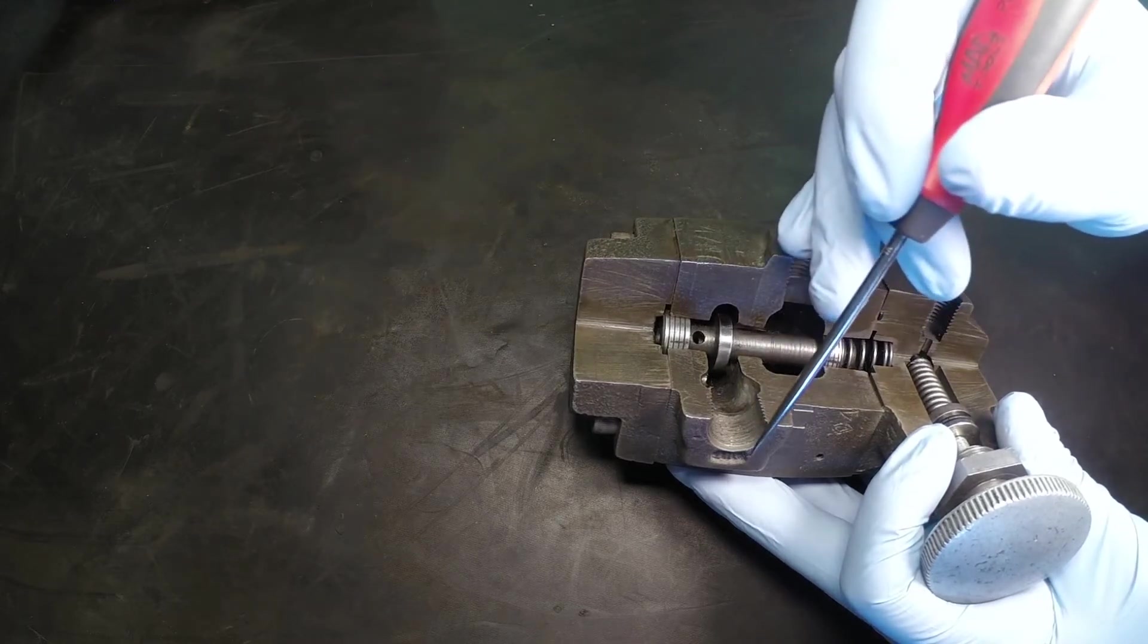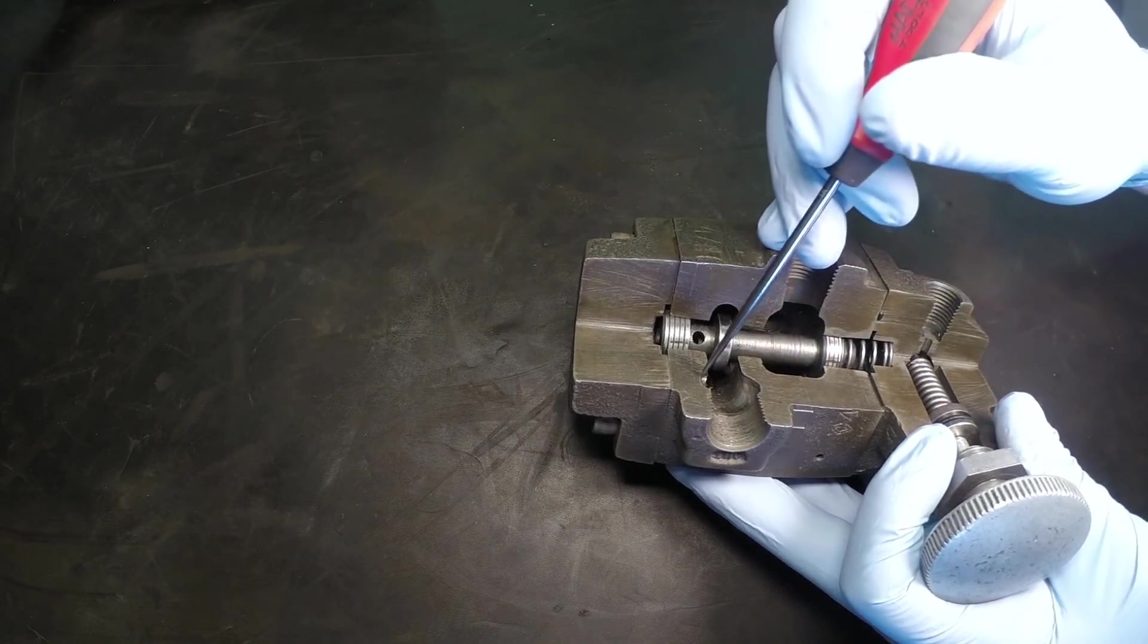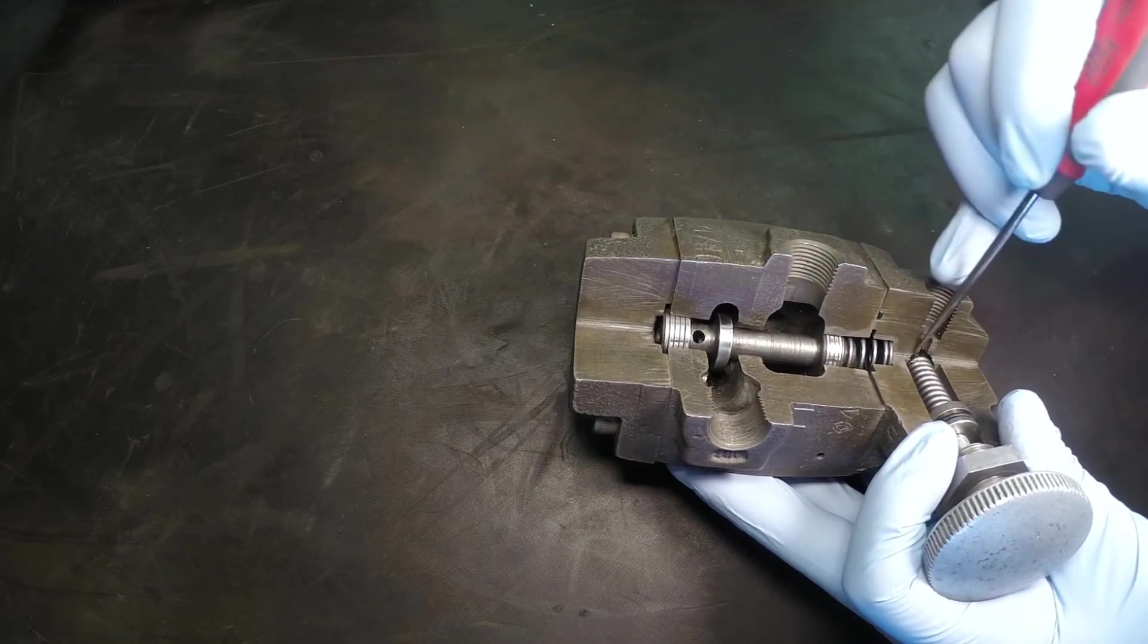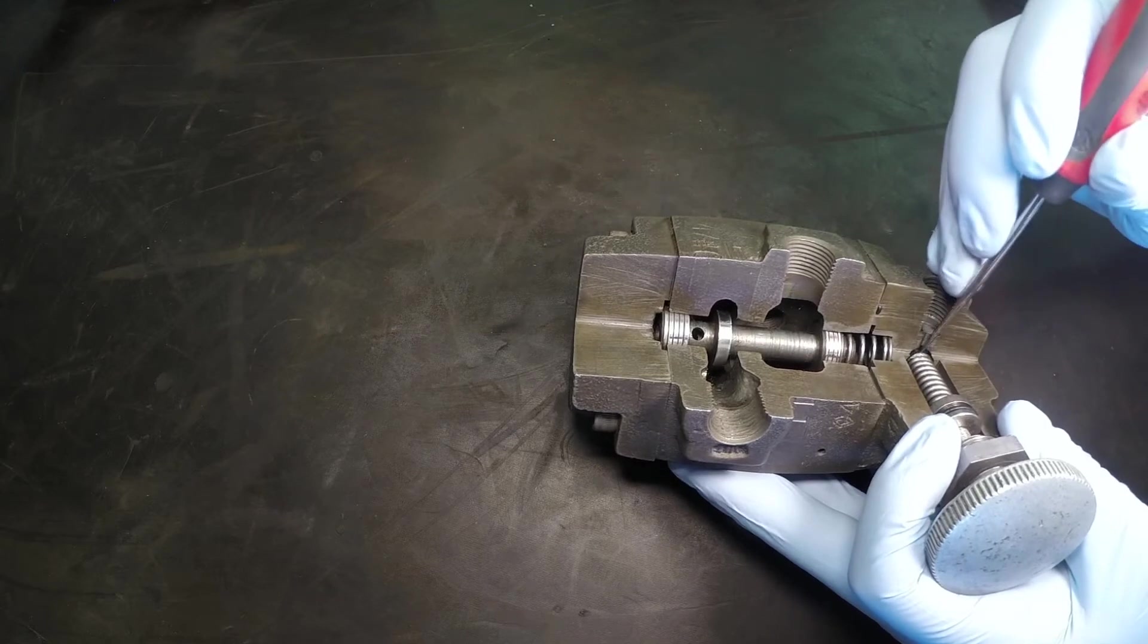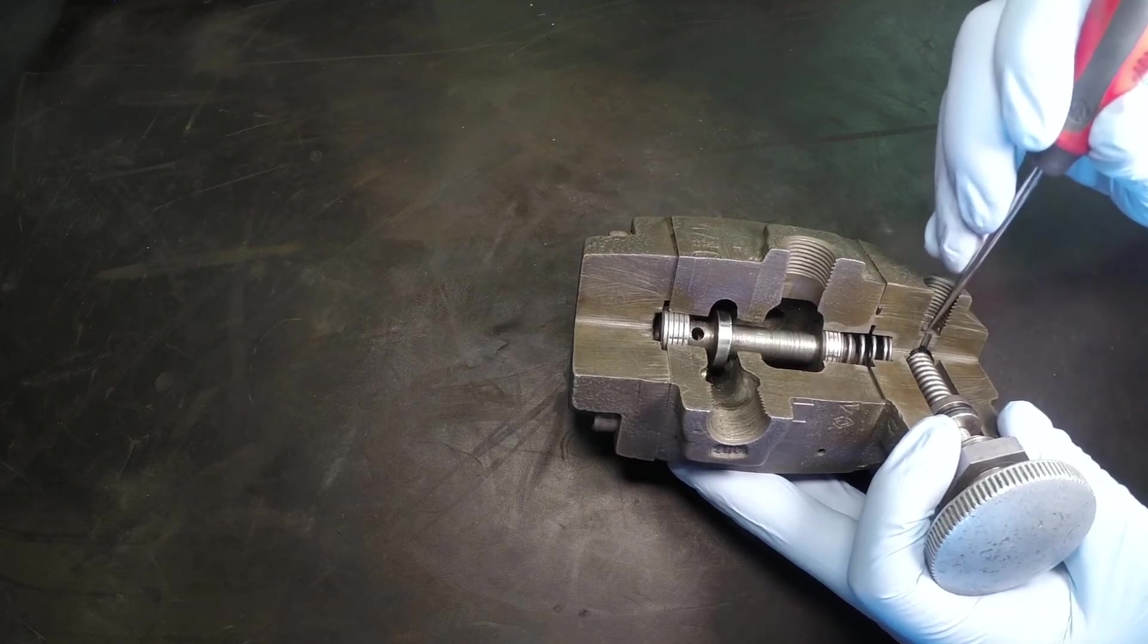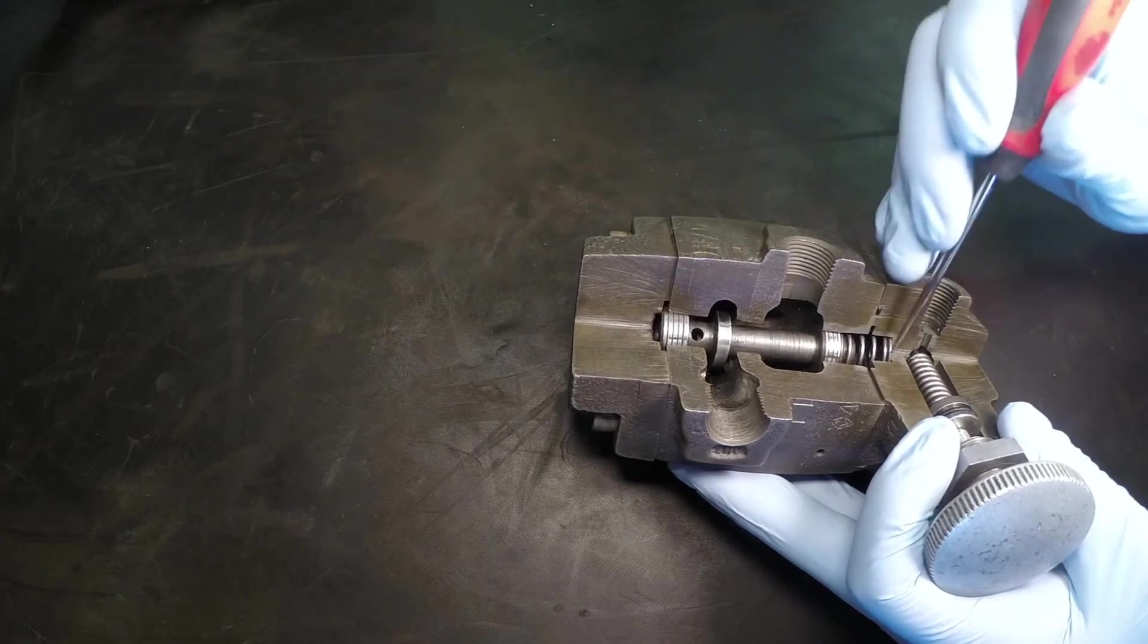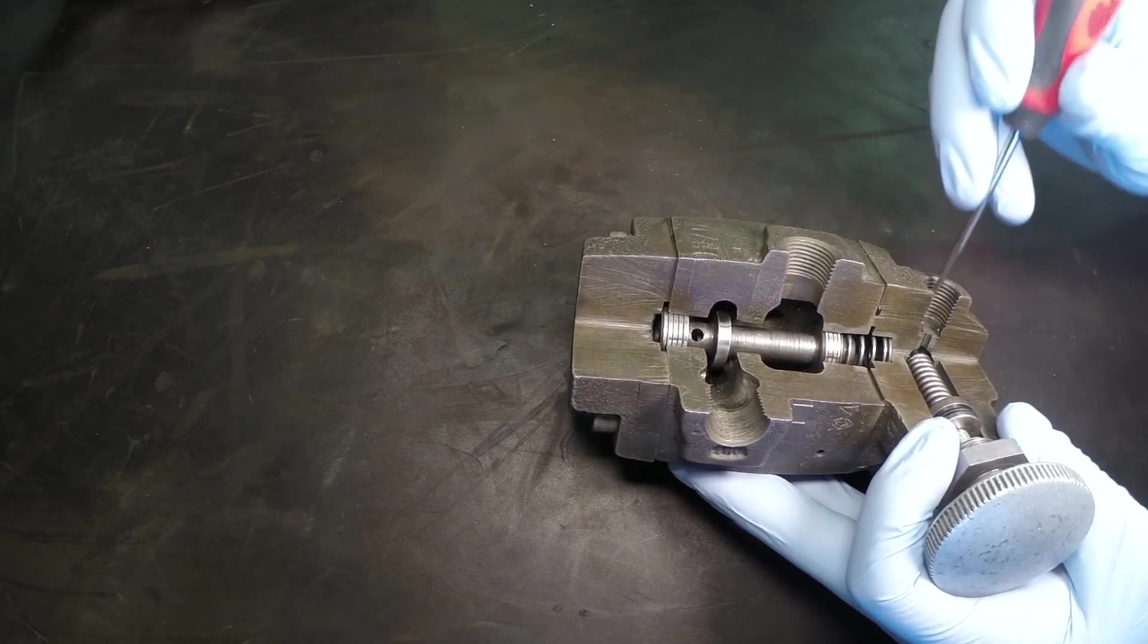As that rising pressure gets onto the bottom side of the spool and also the top side and also this poppet, this poppet is going to open up, sending any additional pressure above the 1500 PSI out this external drain.